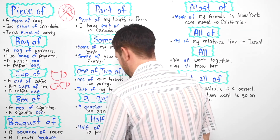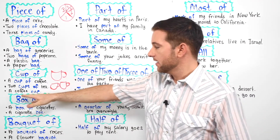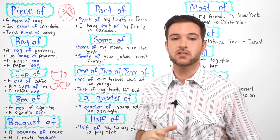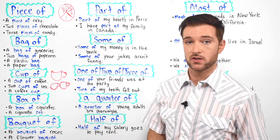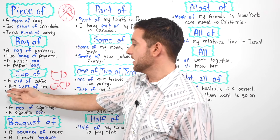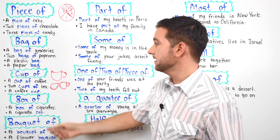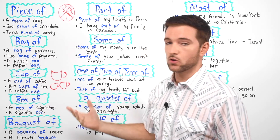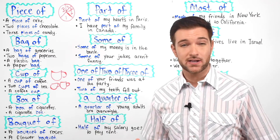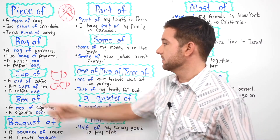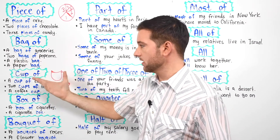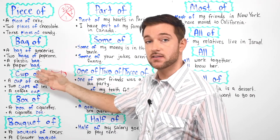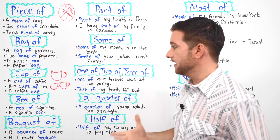But look here — we're not talking about quantity. We're actually going to be describing the cup, but not so much the quantity. So in this case, we say "a coffee cup." We're not describing the quantity, we're just describing what kind of cup it is. Similar to here, a plastic bag — what kind of bag is it? It's a plastic bag, or a paper bag — a bag made out of paper.